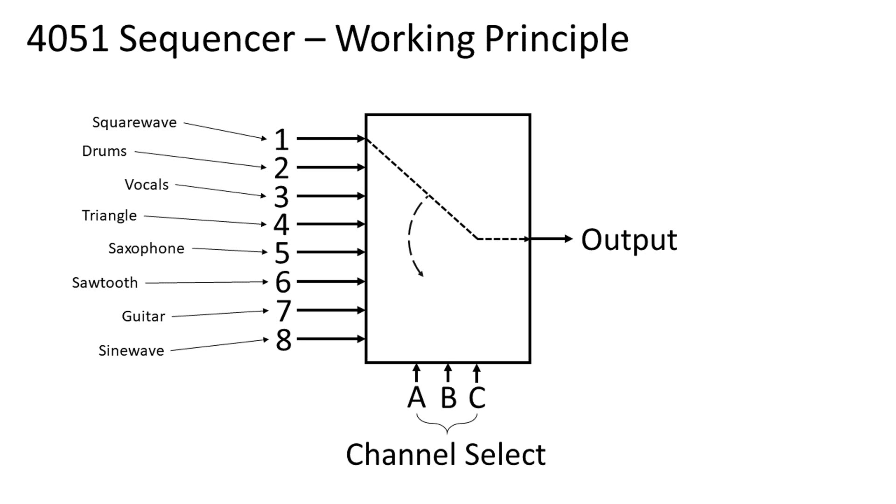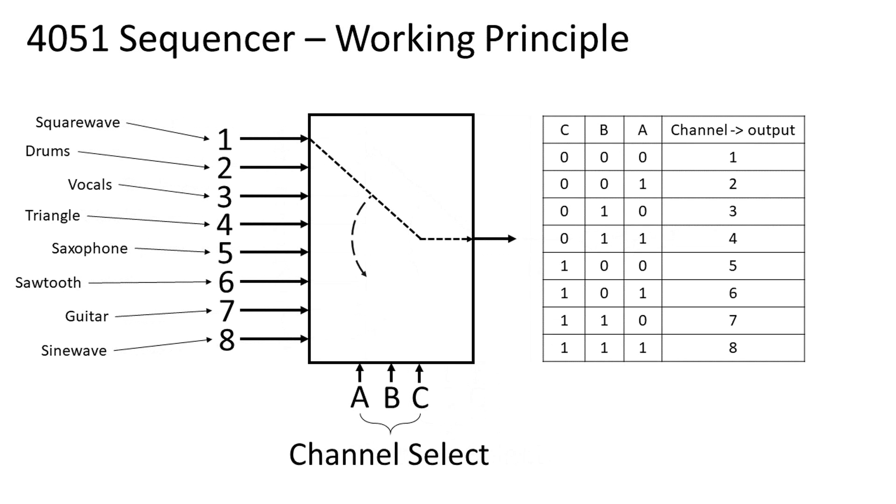The channel select pin works with 3-bit binary signals. In the following table you can see what combination of digital signals on each channel select pin decides which channel gets connected to the output. So you have to connect square waves to these pins or any other signal that offers a high or low level.